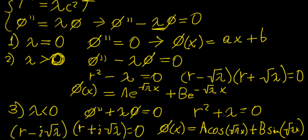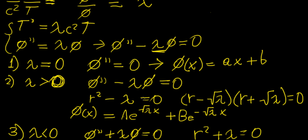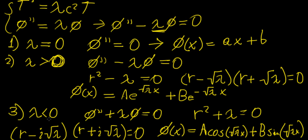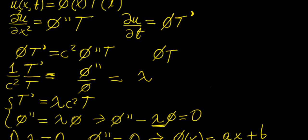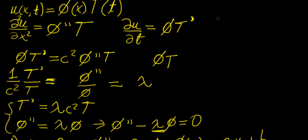We write the solution in cosine and sine form rather than complex exponentials because we can absorb the complexity into the constants — this is covered in the differential equations playlist if you need a refresher. These are the three possible solutions for this PDE. The next step is to apply boundary conditions, which allow us to determine which of these three solutions is the correct one for a particular problem.